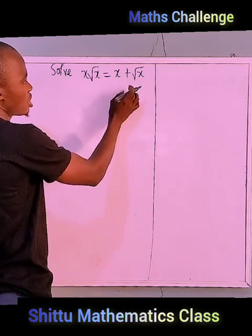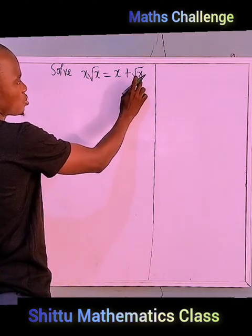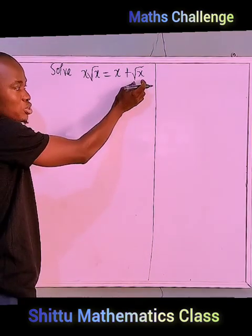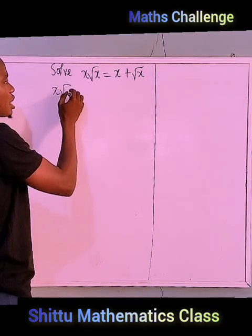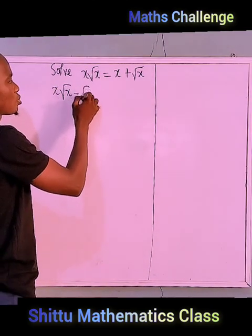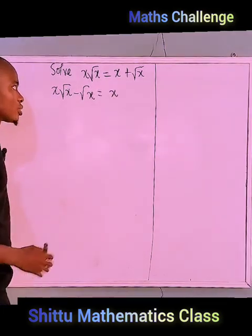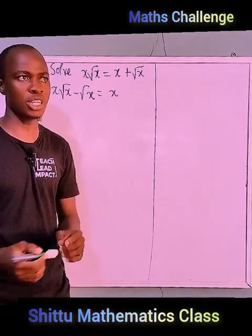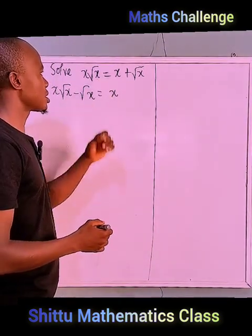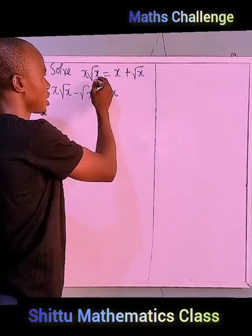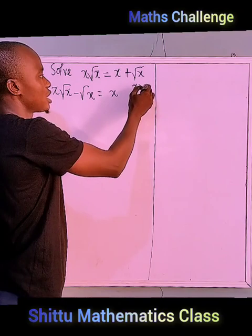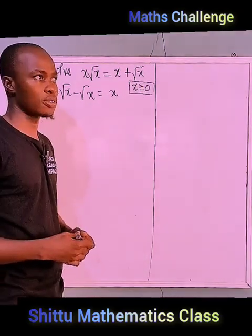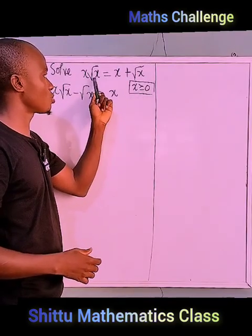I'm going to transpose root x to this side, because I have root x here. Trying to collect like terms, I would like to transpose root x to this side, so it's going to be x·root x minus root x equals x. Now, x cannot be negative — x must always be greater than or equal to zero.